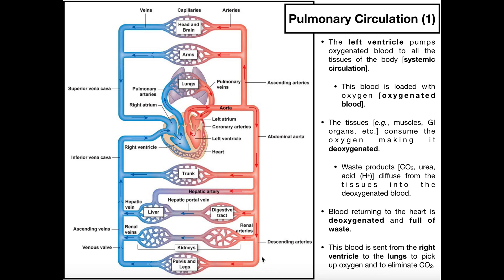That blood goes everywhere — to the head and brain, the arms, the trunk, the liver, which is important for the absorption and processing of food, the digestive tract in general, the kidneys, the pelvis, the legs. All of those tissues need oxygen. They also need things like glucose, amino acids, lipids, and ketone bodies, but oxygen is the main thing we're focused on here.